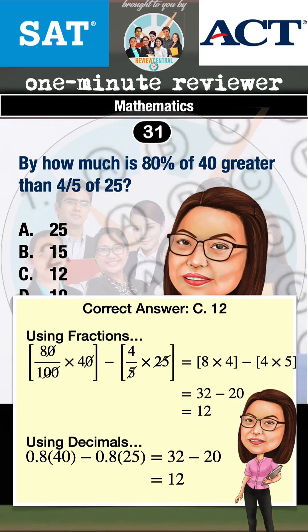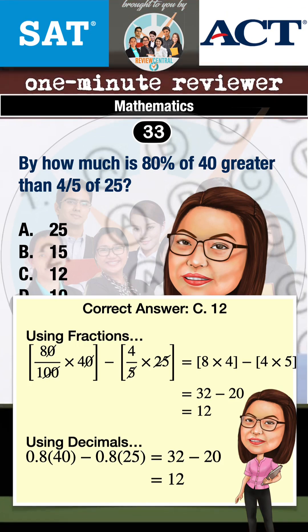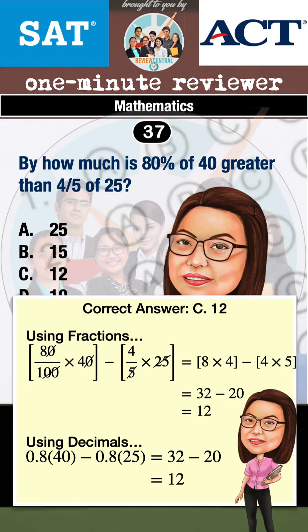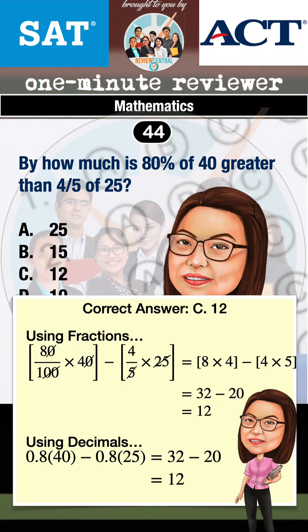We are being asked by how much the first term, that is, 80% of 40, is greater than the second term, that is, four-fifths of 25. Therefore we simply subtract the second term from the first term to get the difference, which is how much the first term is greater than the second term.